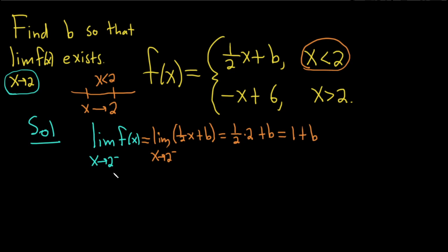So we've basically worked out just the limit from the left. So what are we trying to do? We're trying to find b, again, so that this limit exists. So we want the one-sided limits to be the same.